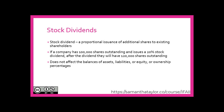A stock dividend is a proportional issuance of additional shares to existing shareholders. For example, if a company has 100,000 shares outstanding and issues a 20% stock dividend, after the dividend they will have 120,000 shares outstanding. If an individual shareholder held 1,000 of those original 100,000 shares, after the stock dividend they would now have 1,200 shares. This does not affect the balance of assets, liabilities, equity, or ownership percentage.